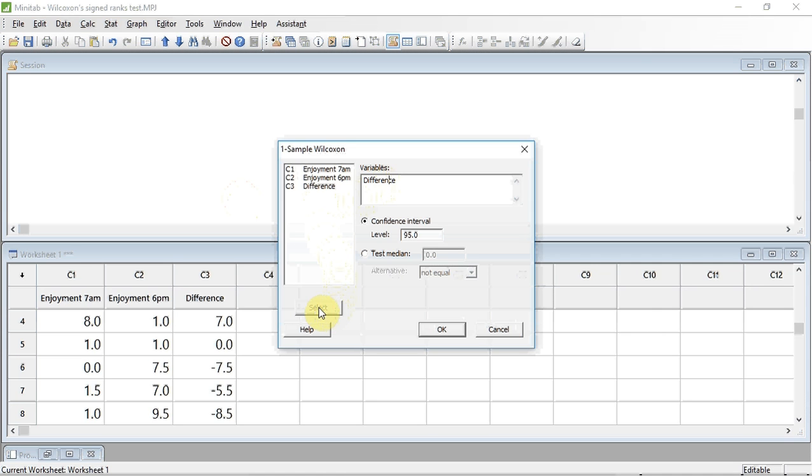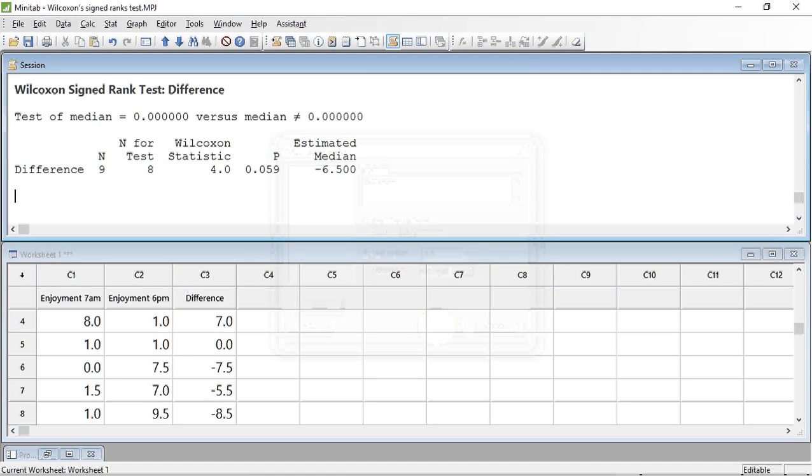We then need to select the Test Median Radio button and click. Leave the Test Median at 0 and the Alternative at not equal. Then press OK. We can see the results in the Session window.